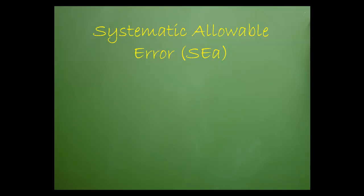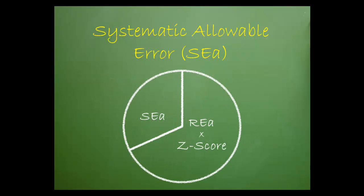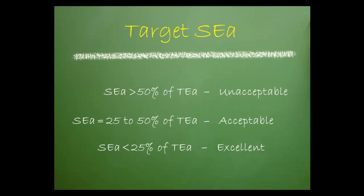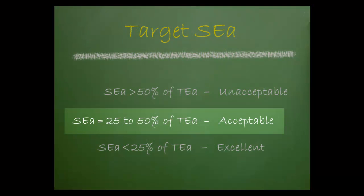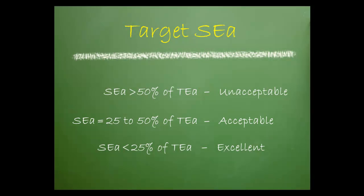Now that you understand the concept of systematic error, let's define systematic allowable error. SEA is a goal used to describe the accuracy at which a test system should be performing. SEA is one of two components of TEA, which laboratories use to designate quality specifications for clinical testing. One approach is to target SEA at 25 to 50% of TEA.